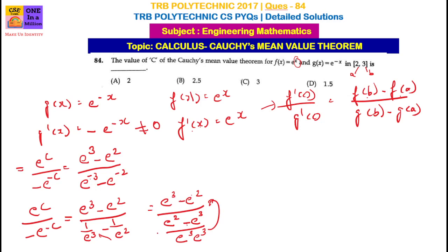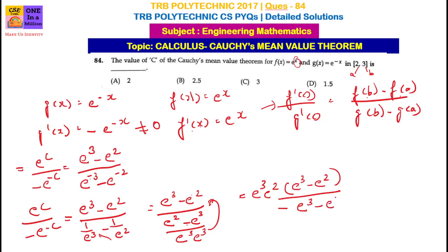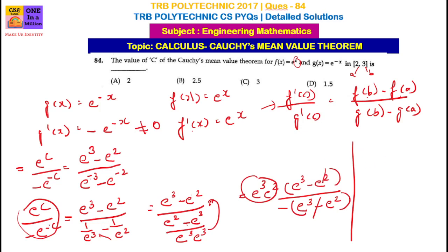After cross-multiplying, we get: e power 3 minus e power 2 divided by e power 2 minus e power 3. We can cancel common terms. The left-hand side has e power c, and the right-hand side has minus e power minus 3. Simplifying, we equate the powers.